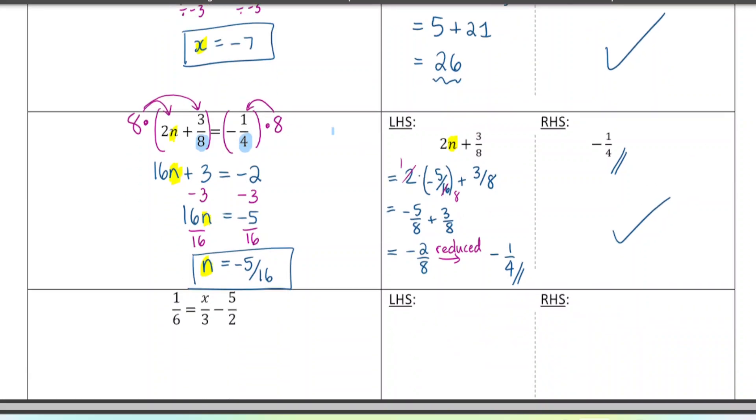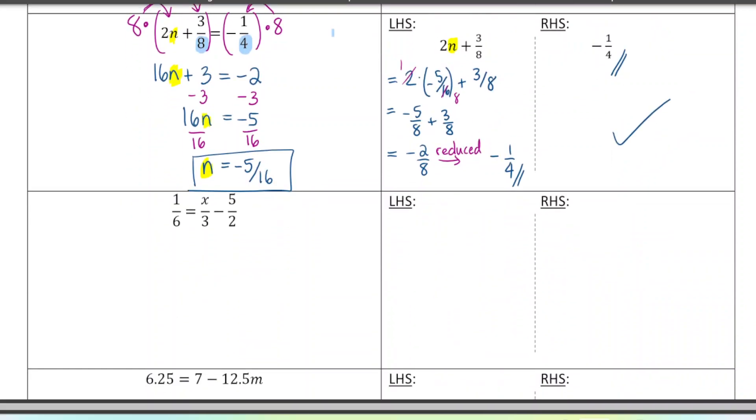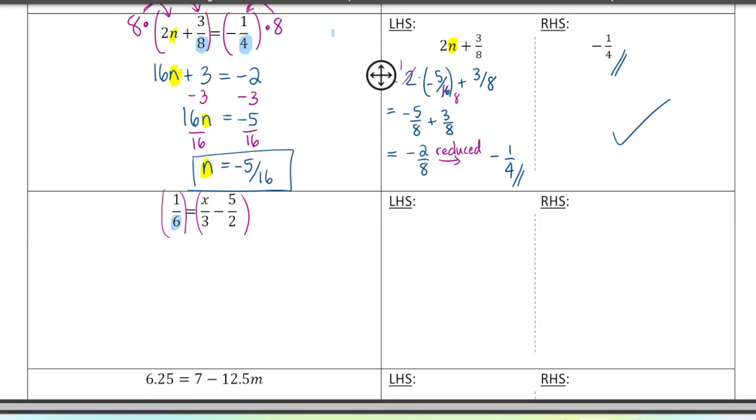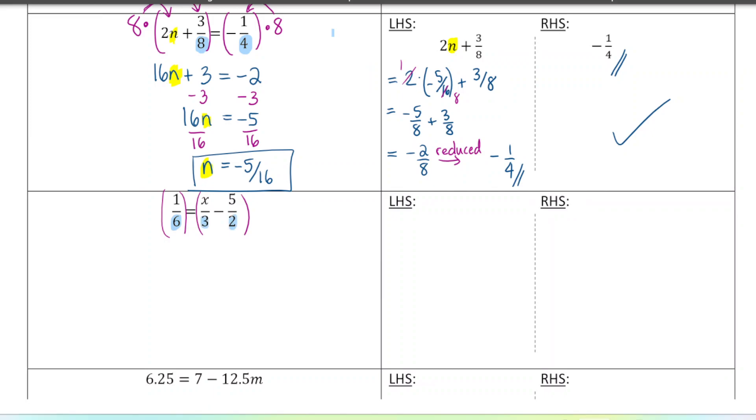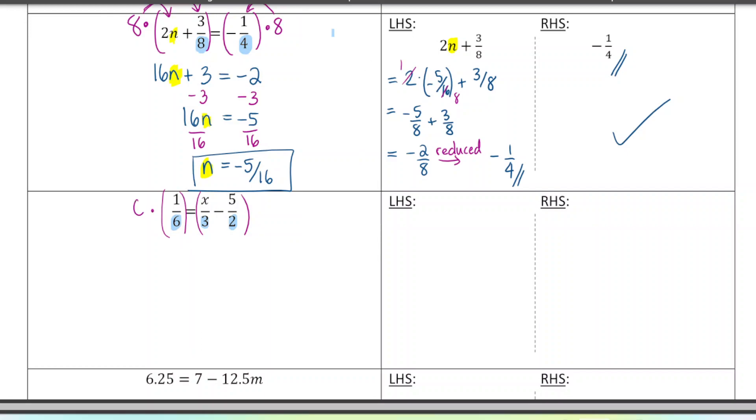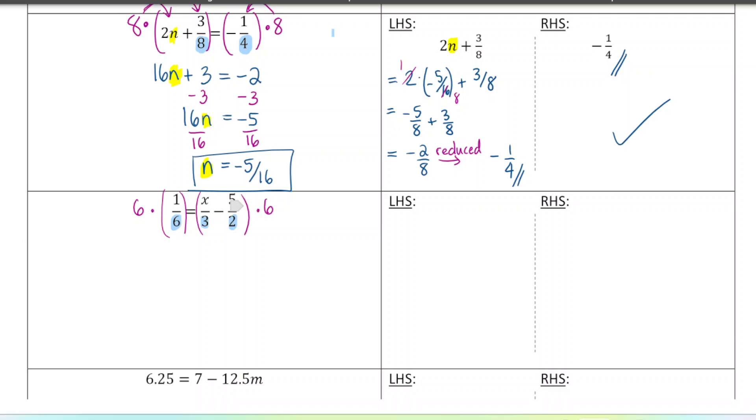Next level up. I would recommend if you're feeling pretty confident, maybe pause the video here and try this one on your own using the trick I showed you on the last example. So here we want to think of something that is a lowest common multiple of 6, 3, and 2 to get rid of those fractions. So I'm going to choose 6 because 6, 3, and 2 all go nice and evenly into 6. So I'm going to multiply both sides by 6. So I'll get 1 equals 2x minus, so to evaluate this, I would go 6 times 5, which is 30, divided by 2 is 15.